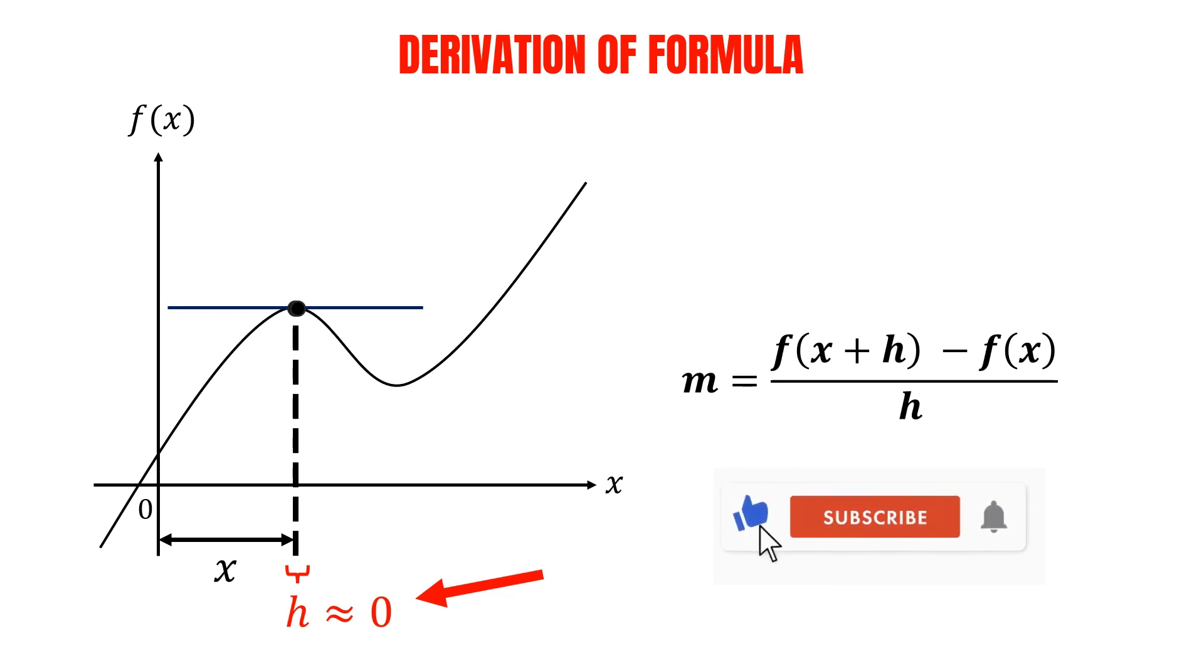The reason for bringing the two points very close to each other, is that the secant line passing through both points can now serve as a great approximation of the tangent line at this specific point. The gradient of this line is actually what we are trying to find when taking derivative of the function.